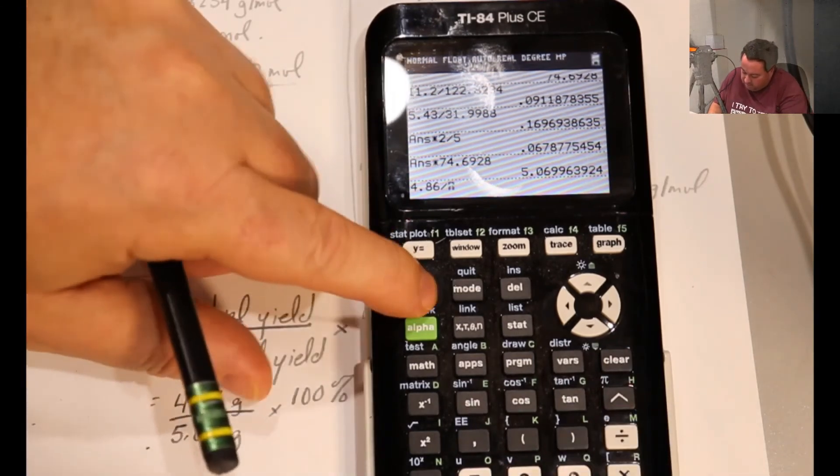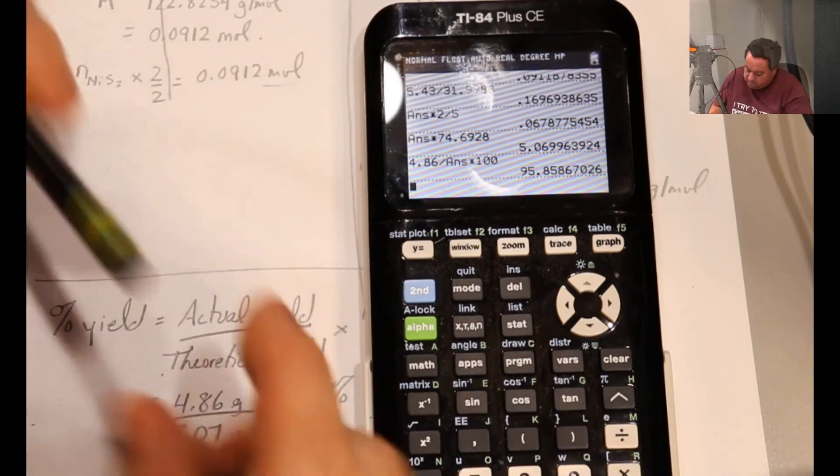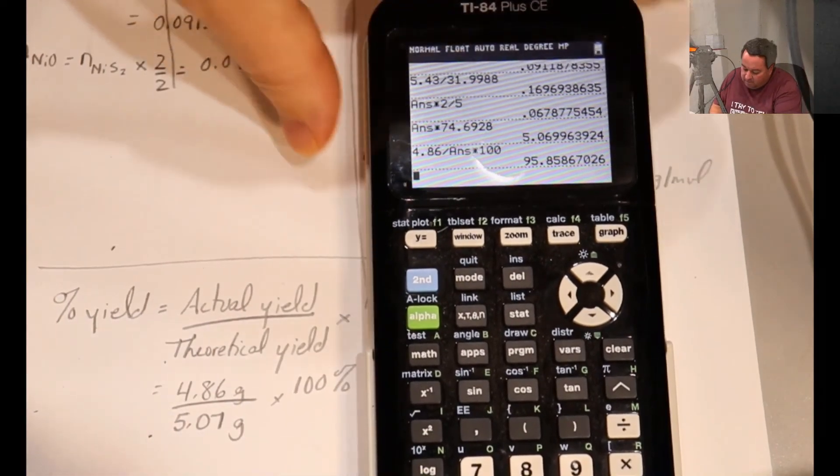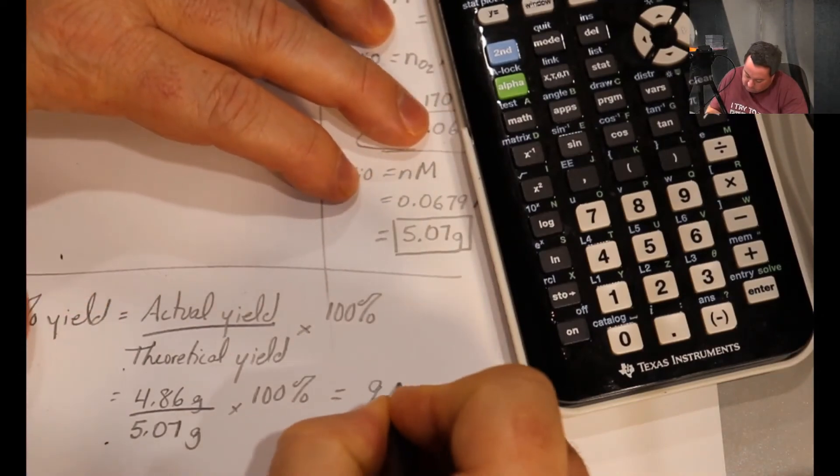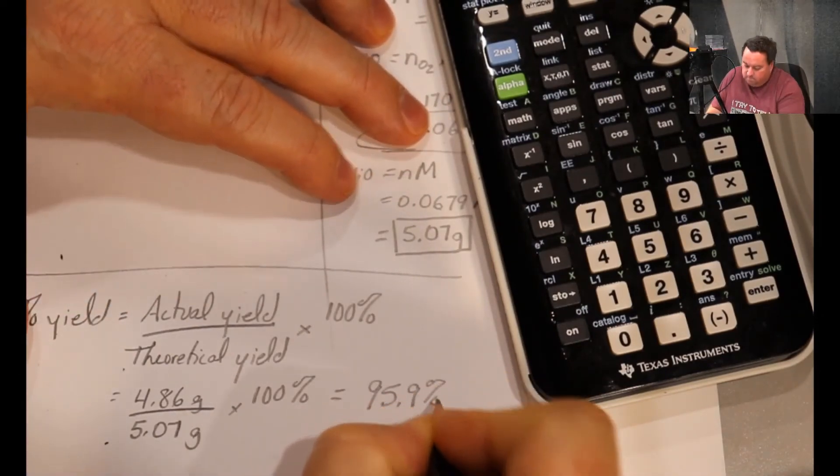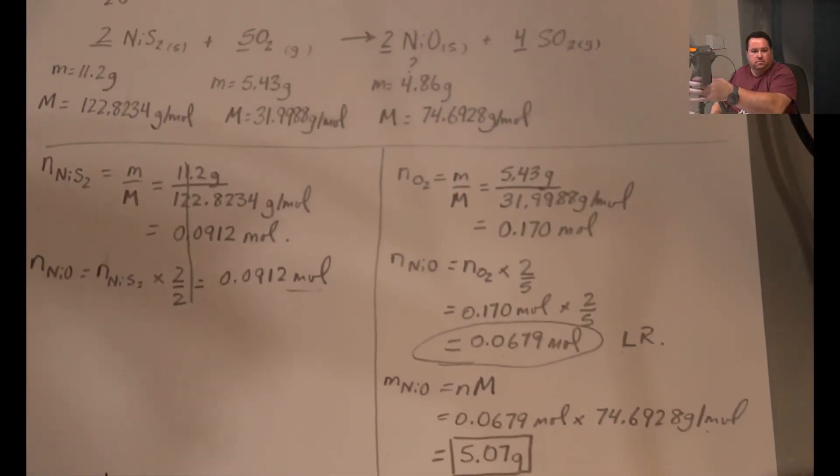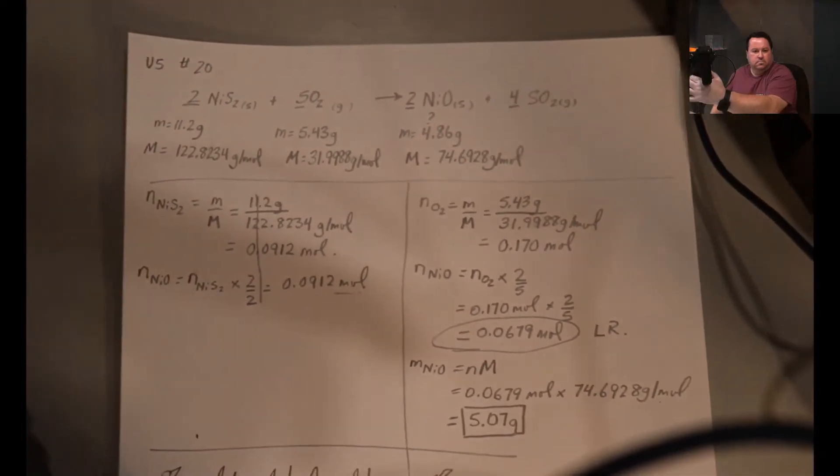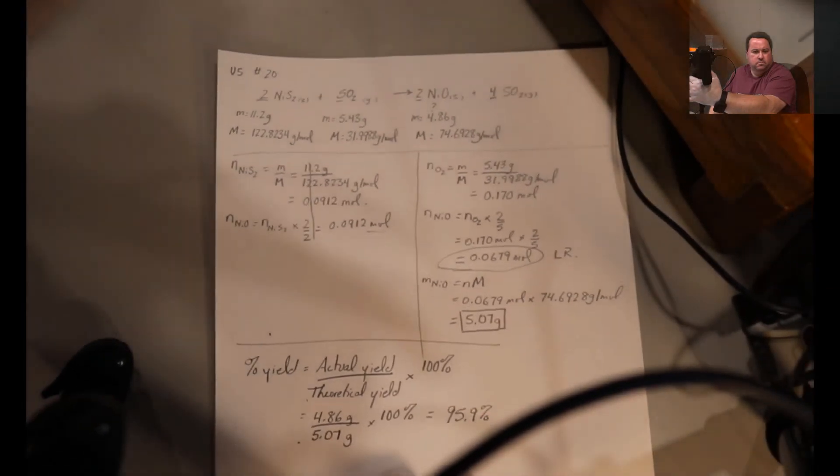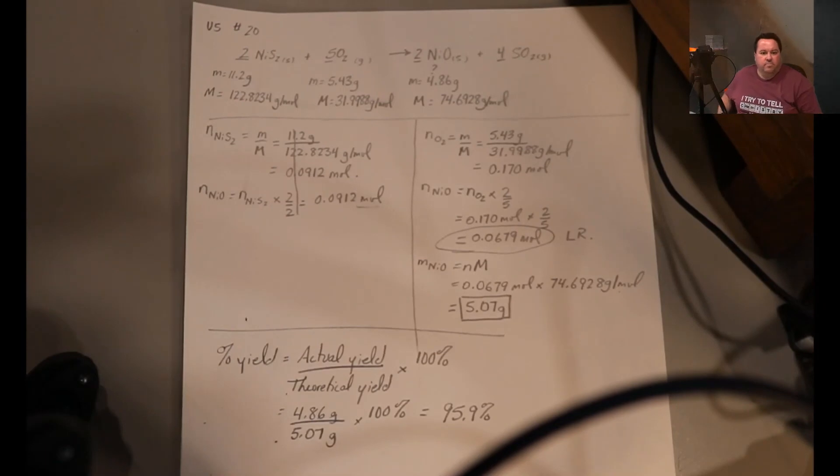Divided by last answer and times 100. So 95.9% yield. Okay. So there it is, 95.9% yield.